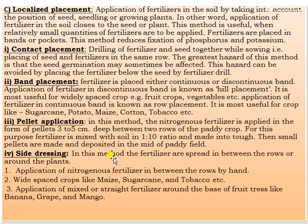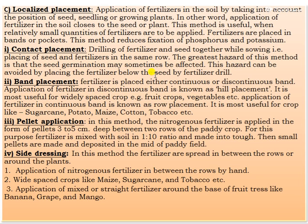The second method is localized placement. In this method, the application of fertilizer in the soil takes into account the position of the seed, seedling, or growing plants. In other words, the fertilizer is applied in the soil closest to the seed or plant. When relatively small quantities of fertilizers are to be applied, fertilizers are placed in bands or furrows. This method helps to reduce the fixation of phosphorus and potassium. In contact placement, the fertilizer and seed are drilled together while sowing — placing the seed and fertilizer in the same row. A greater hazard is that seed germination may sometimes be affected, but this can be avoided by placing the fertilizer below the seed using a fertilizer drill.